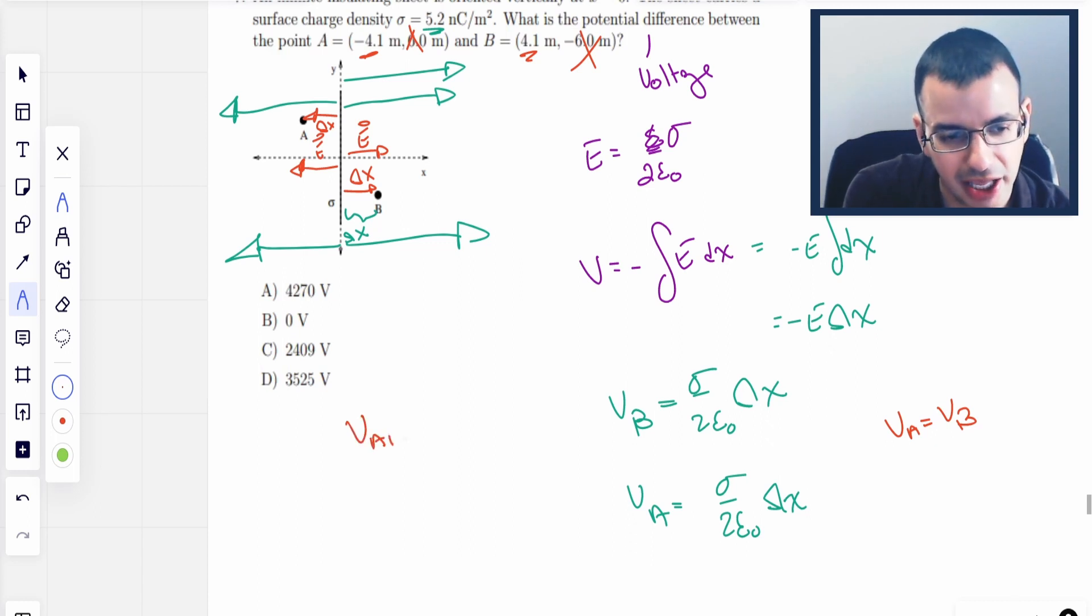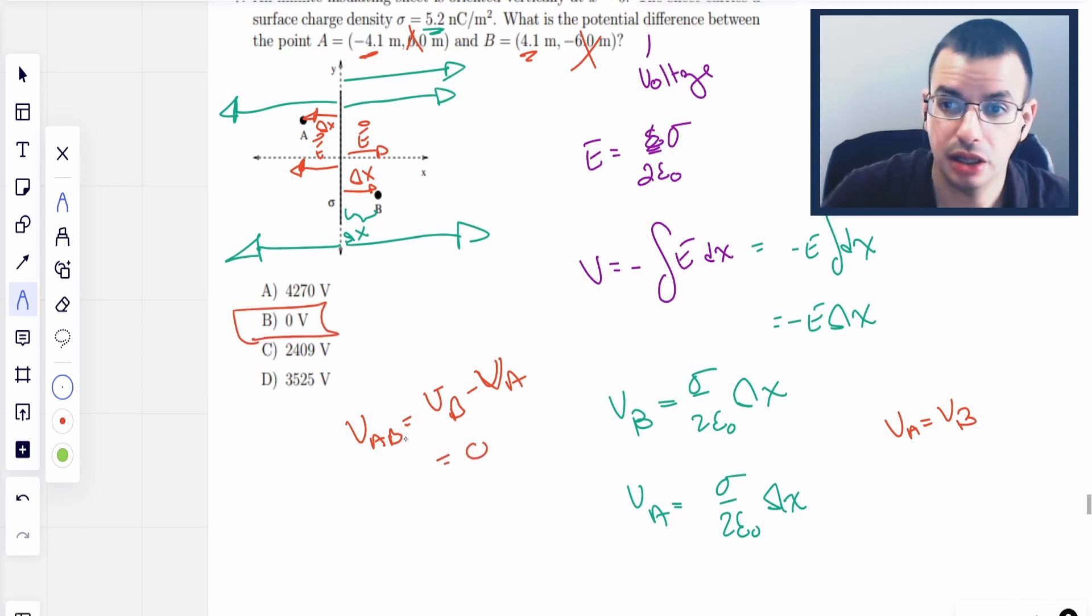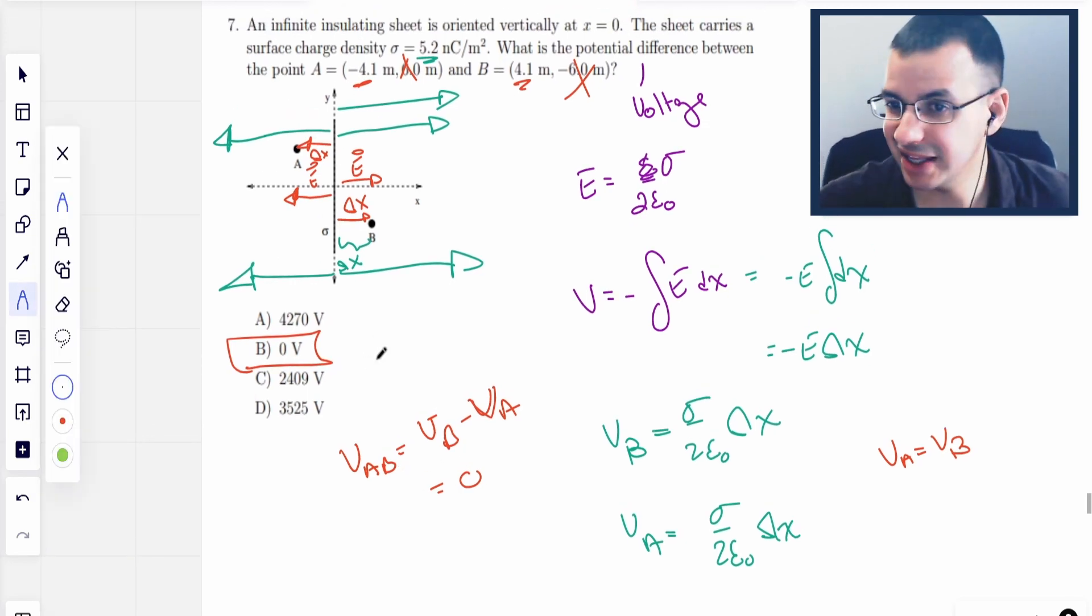Therefore, the potential difference, VAB, which I think there's different notations for this. But I've got to say that VAB implies voltage B minus voltage A, which since they're the same, is zero. So the potential difference between points A and point B is zero. And this is the thought process and how I would approach that. Hope that helped. See you on the next prob.